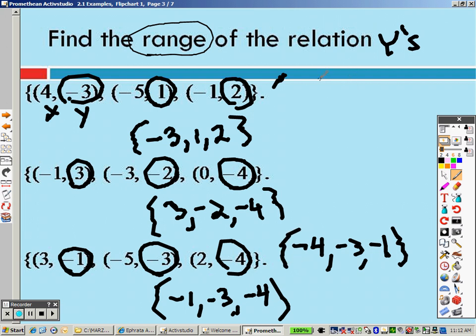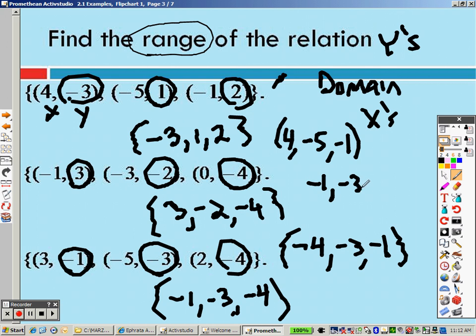Keep in mind the domain. The domain is all of the x's. So all the x's are your domain. The first problem, your domain would be 4, negative 5, and negative 1. Once again, you could write that in order from least to greatest. Your domain in this one would be negative 1, negative 3, and 0. And once again, you could write that from lowest to highest. And down here, it would be 3, negative 5, and 2 would be your domain. It's just what all of your x's are.